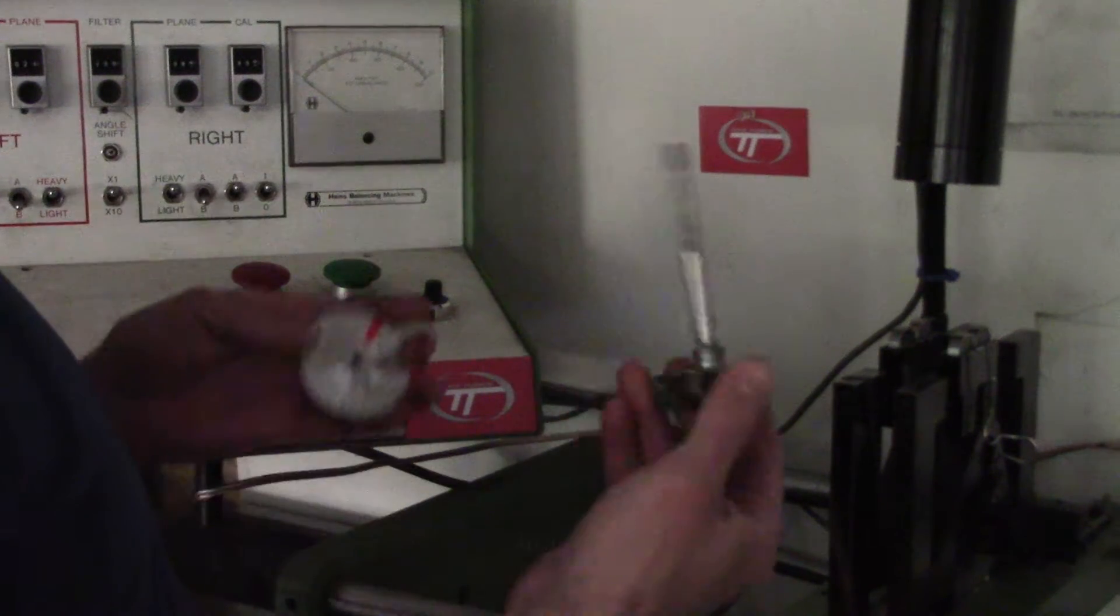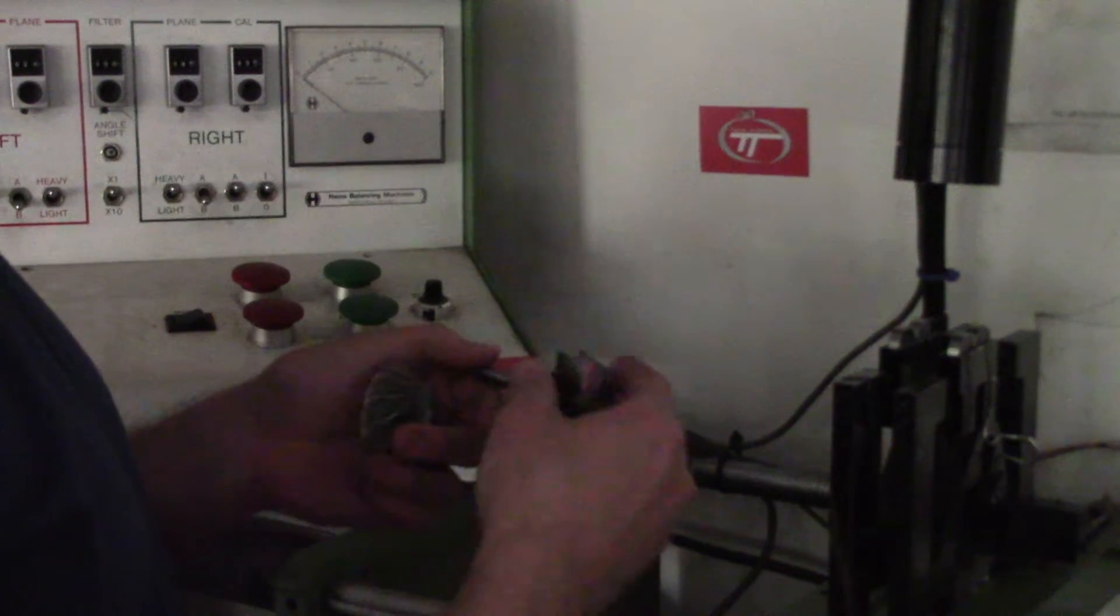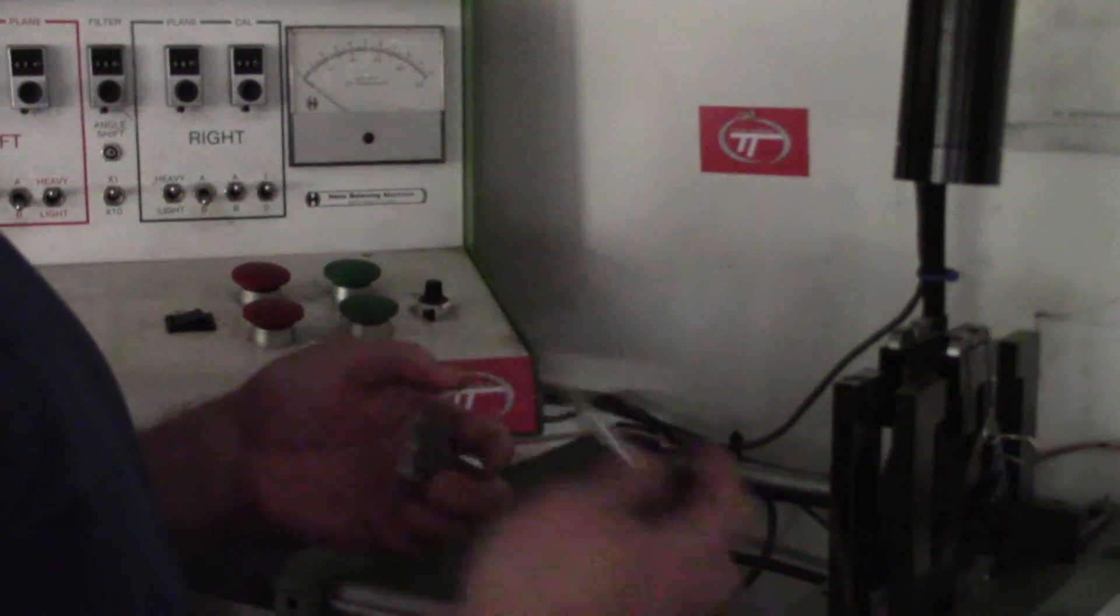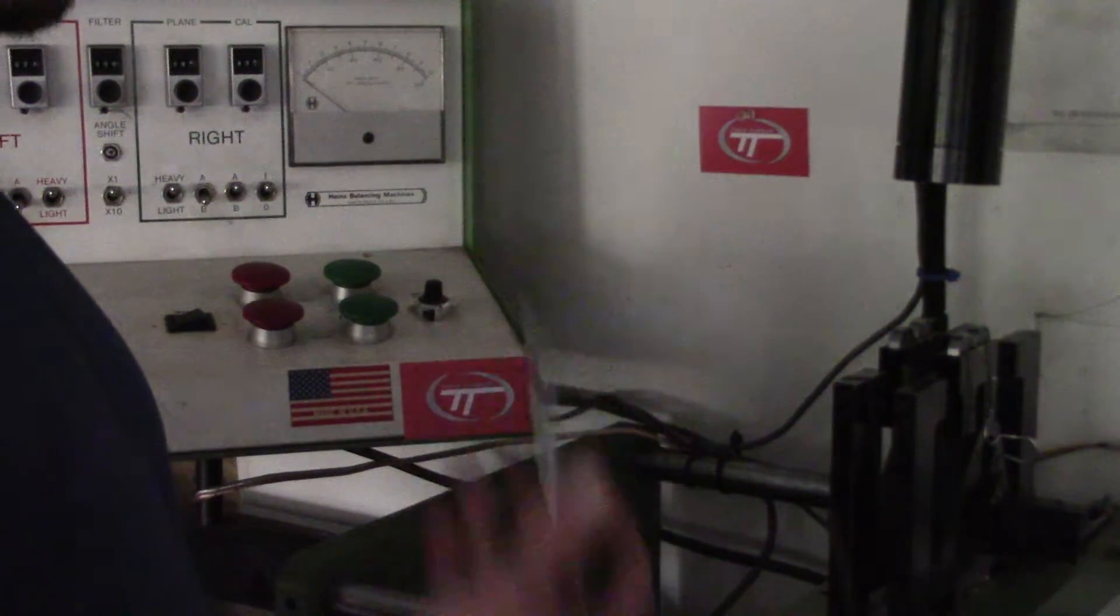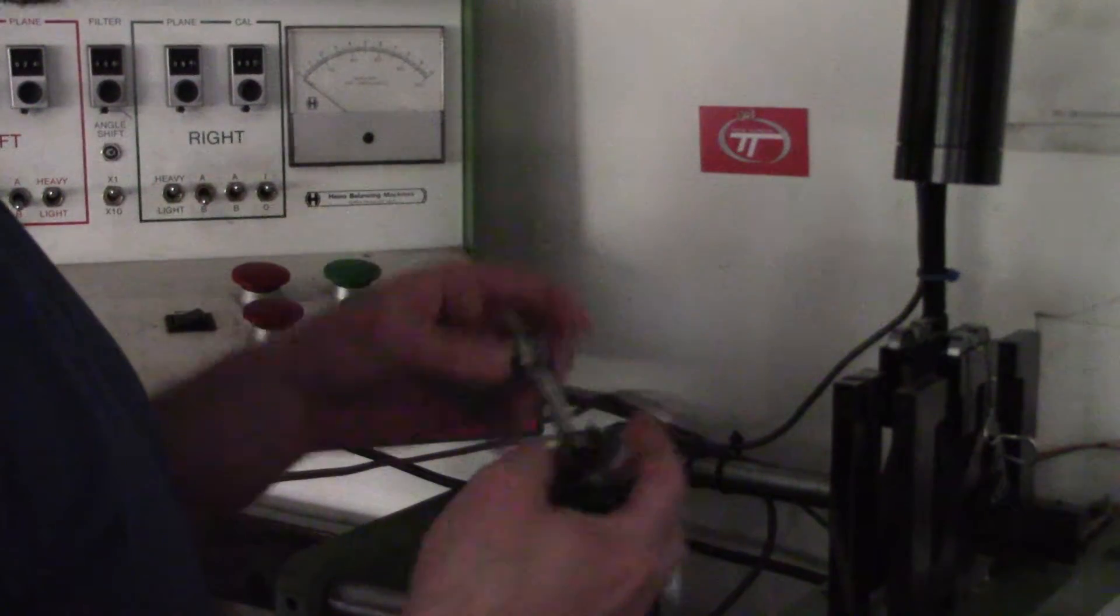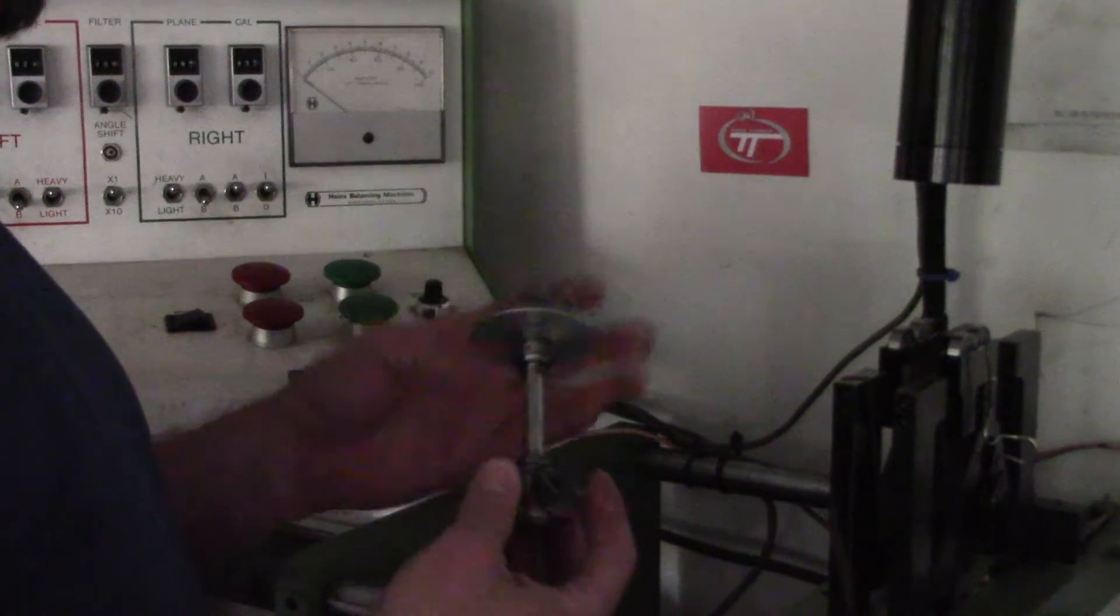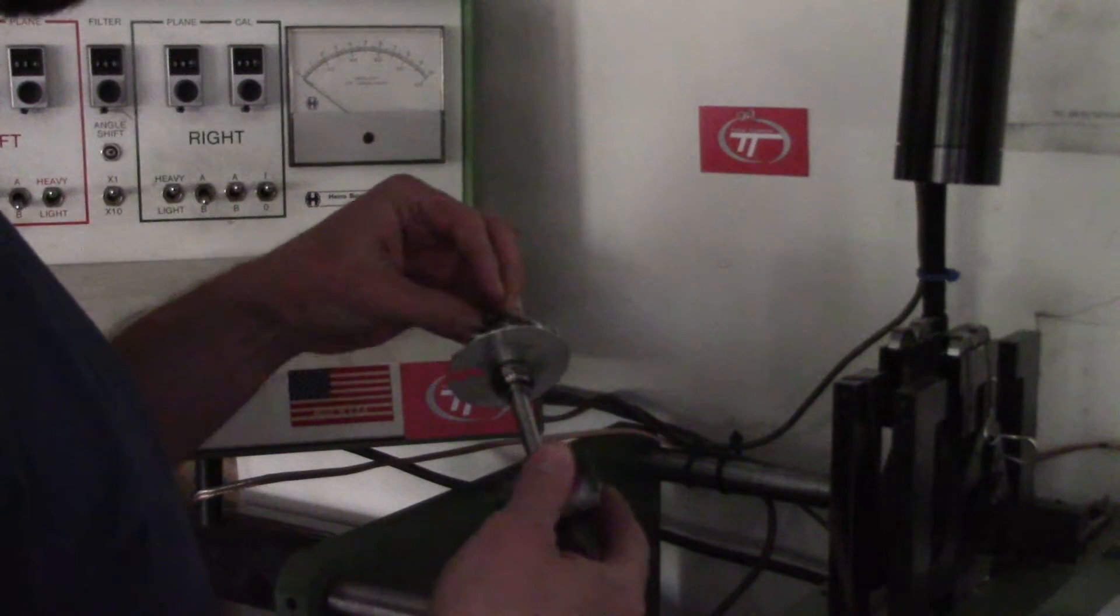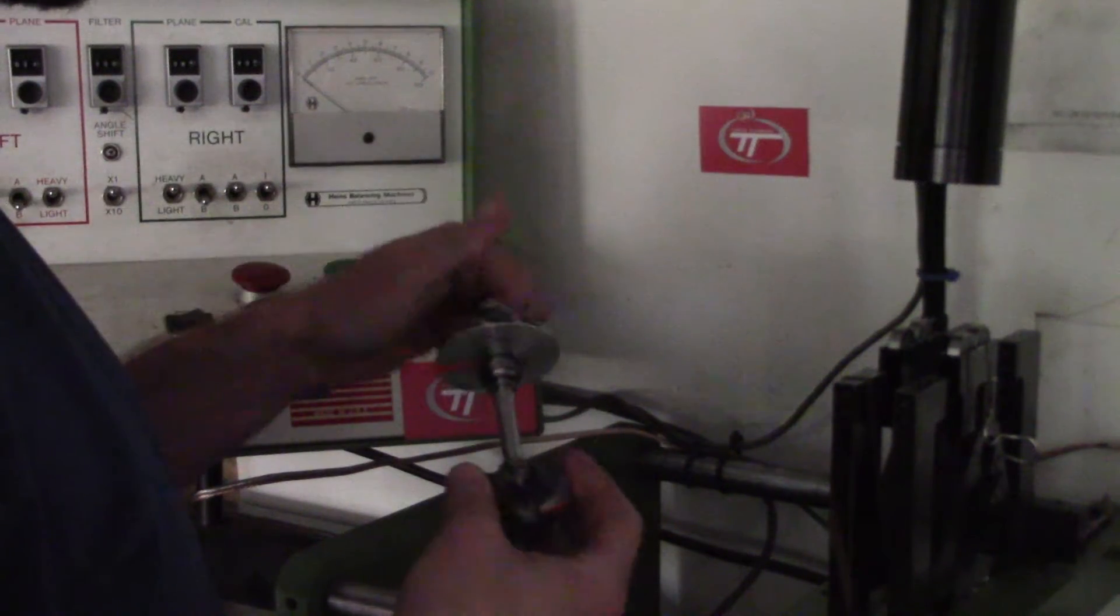Now, this rotor group has already been prebalanced. I did the inner and outer plane. Same with the compressor wheel, and the shaft is straight all the way up to 3 ten-thousandths of an inch. So I'm going to go ahead and assemble this rotor group. This is basically a T28 Garrett turbocharger.